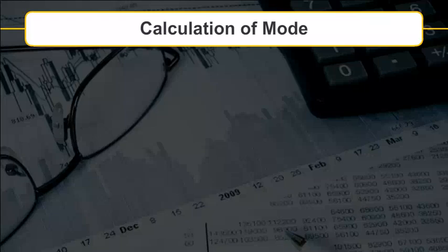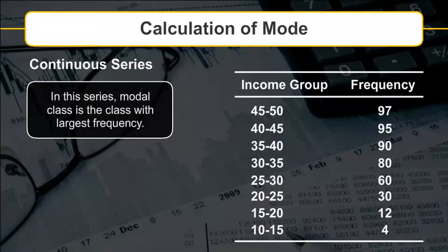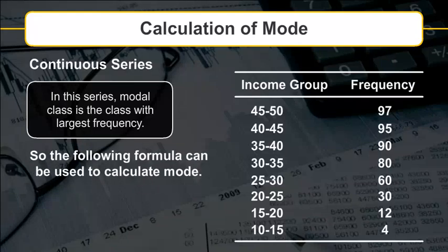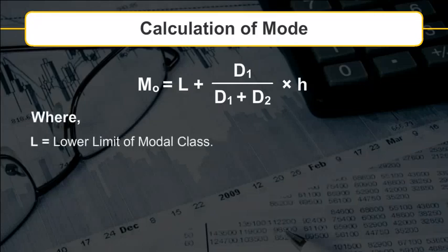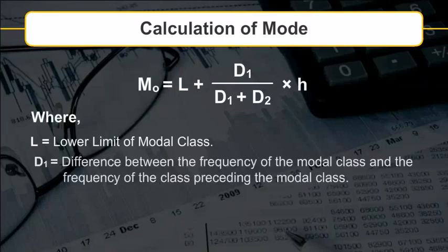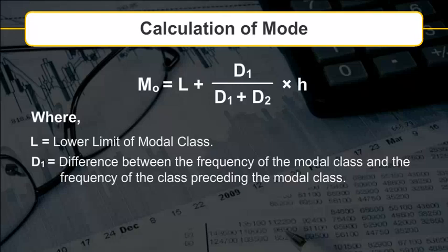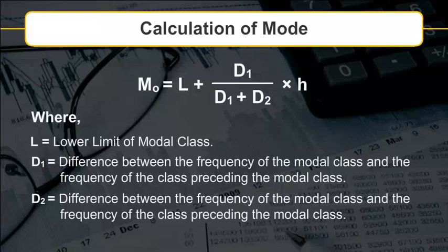For continuous series, the modal class is the class with the largest frequency. The mode is calculated as: MO = L + [D1 / (D1 + D2)] × H, where L = lower limit of the modal class, D1 = difference between the frequency of the modal class and the frequency of the class preceding it, D2 = difference between the frequency of the modal class and the frequency of the class following it, and H = class interval of the distribution.